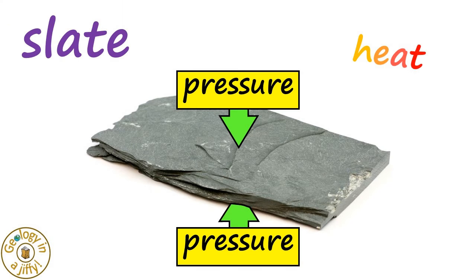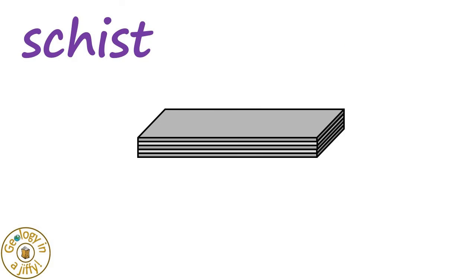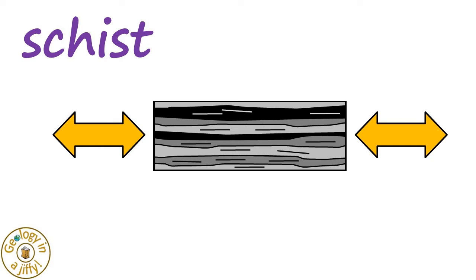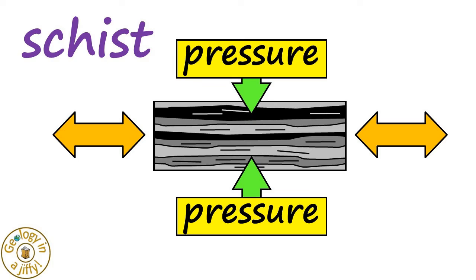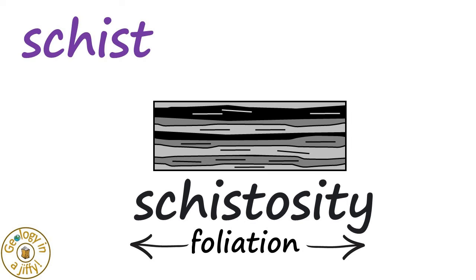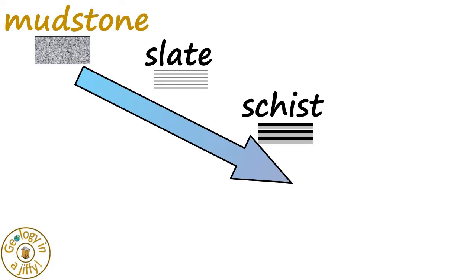If we then further compress our slate and heat it to greater temperatures, schist is formed. Schist is more compact than slate, and if we study it more closely, we see the crystals are larger than in slate, and align perpendicular to the direction of compression, giving us a foliation called schistosity. So with more metamorphism, our slate is metamorphosed into schist.